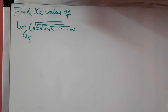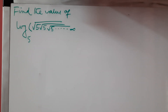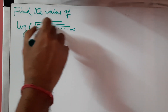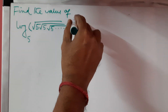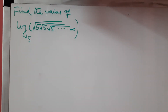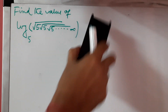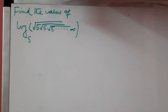Let's find the value of log to the base 5 of root under 5, under root 5, under root 5 up to infinity — this goes to the infinity portion. Now how will we solve this? Before solving this, we need to simplify the inner portions.